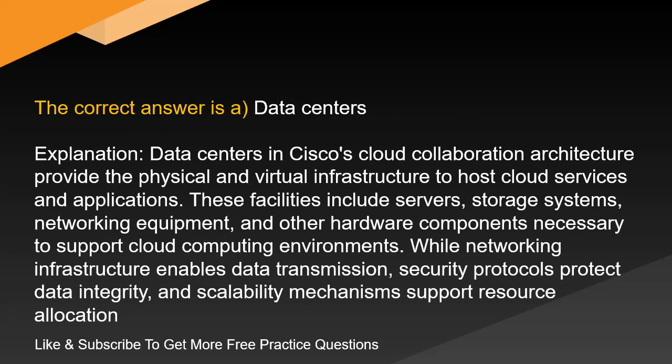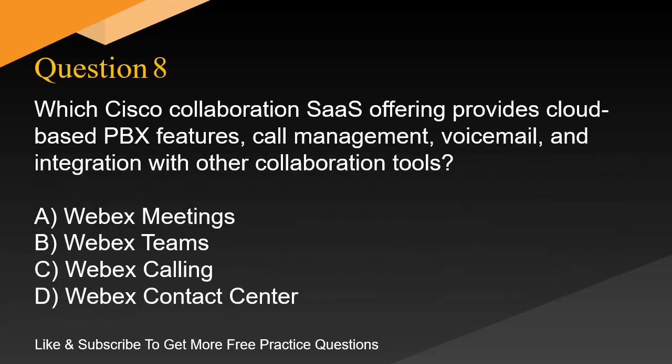The correct answer is A. Data Centers. Data Centers in Cisco's cloud collaboration architecture provide the physical and virtual infrastructure to host cloud services and applications. These facilities include servers, storage systems, networking equipment, and other hardware components necessary to support cloud computing environments. While networking infrastructure enables data transmission, security protocols protect data integrity, and scalability mechanisms support resource allocation.